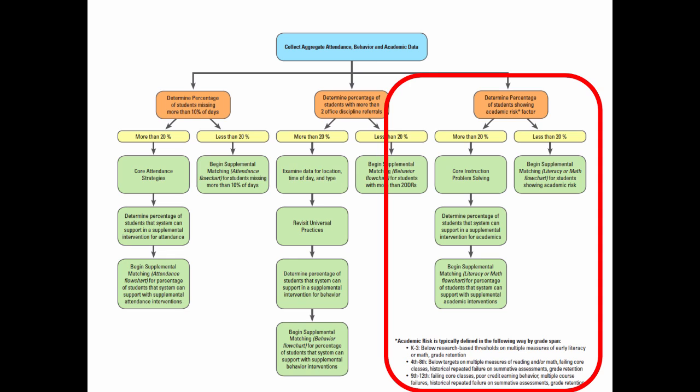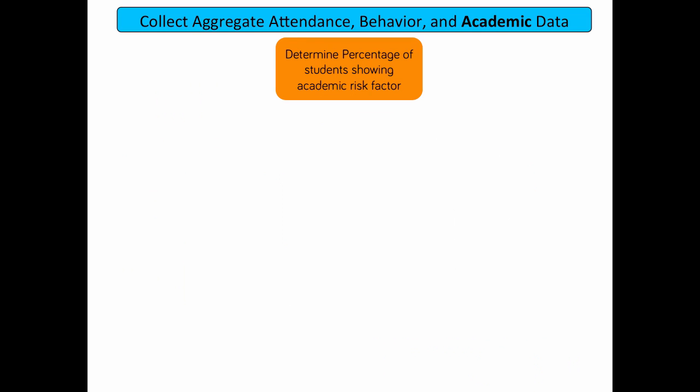The final section of our universal screening system is determining the percentage of students showing academic risk. As mentioned before, these guidelines will vary by subject and grade span. Our first step with academics is to identify the percentage of students who show academic risk. Modules 2.2 and 2.3 will provide more specific guidance on how to identify risk and build intervention systems in literacy and math. Let's review the general guidance to get us started.